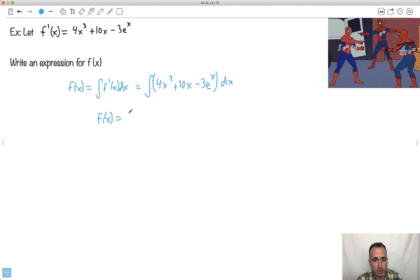So what does 4x cubed become? Remember your trick here. It becomes, this becomes one more. So 3 plus 1 is 4. So it's 4 over 4. I've got to divide by the same number. Plus 10, now right now it's an x to the 1, so it becomes x to the 2 over 2. This one right here, minus 3. Integral of e to the x is just e to the x. Don't forget plus C.